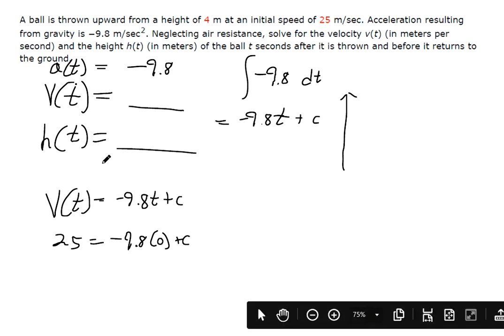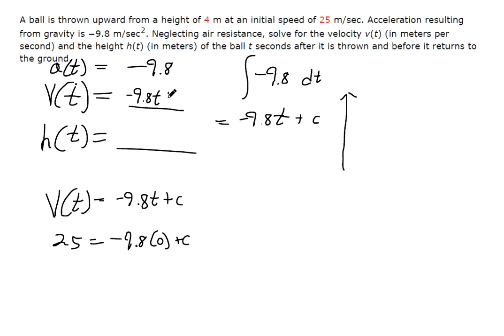If you solve that equation, that's a nice quick one, c is 25. So now we can put the whole velocity equation together without an arbitrary constant. For this problem, this is our velocity equation.